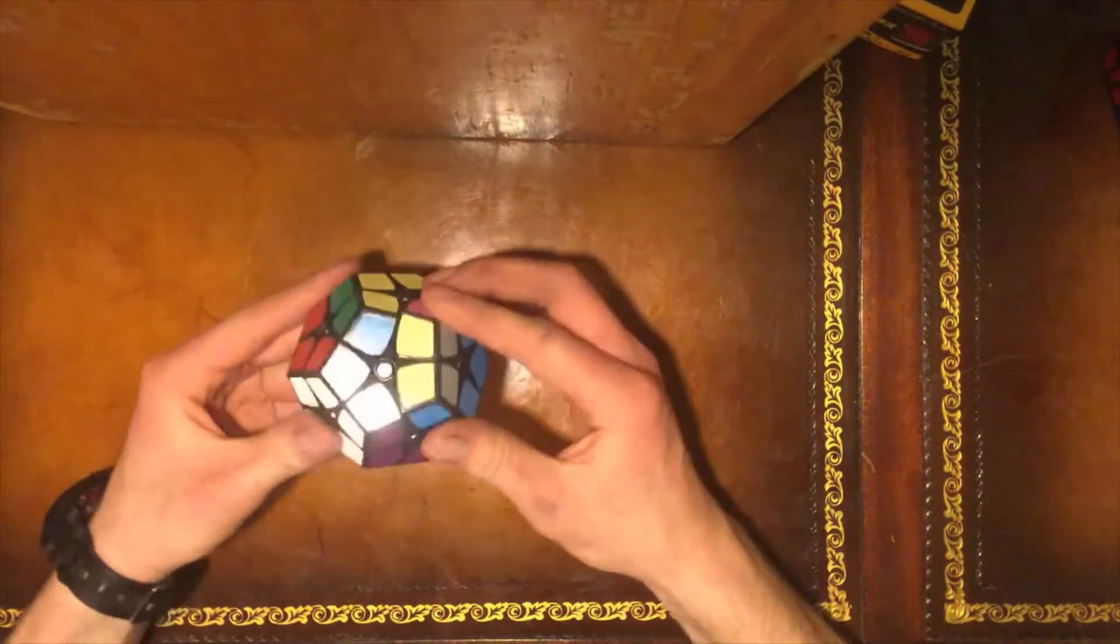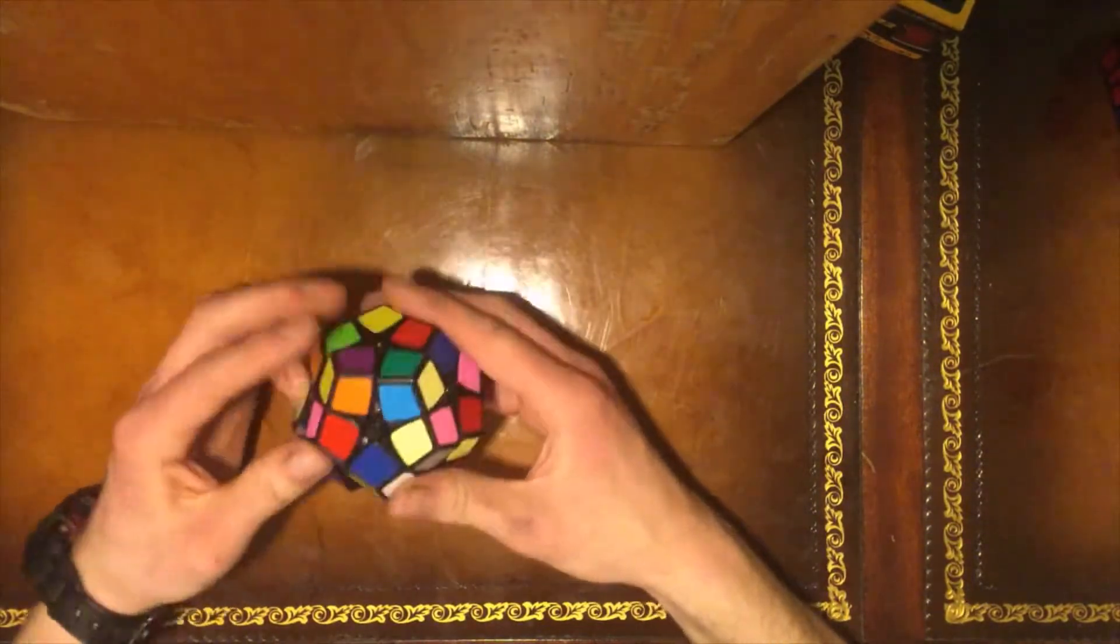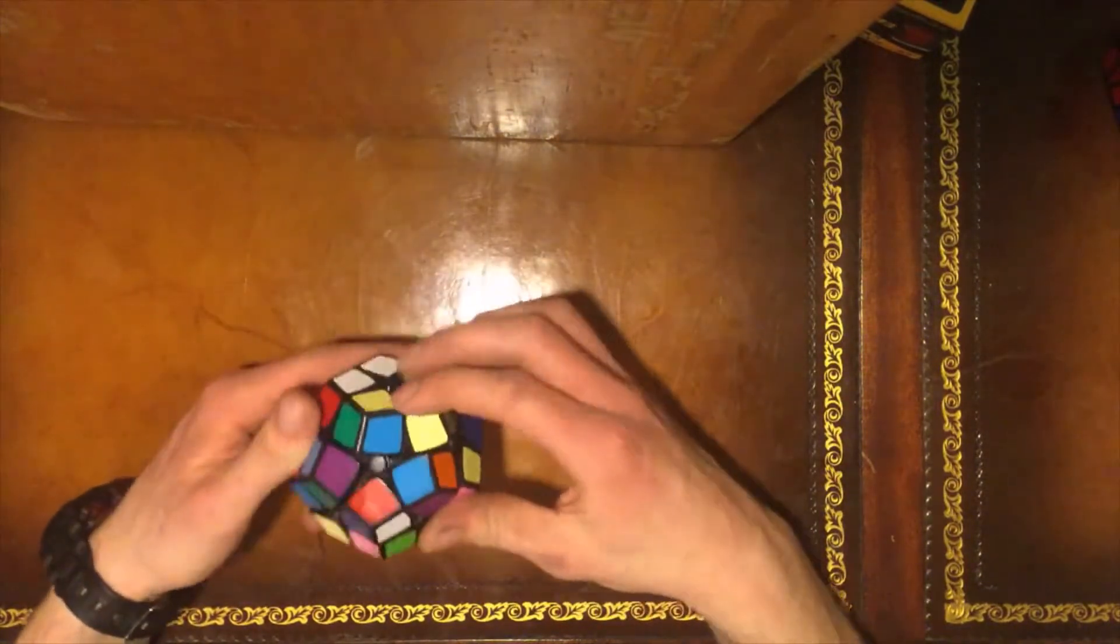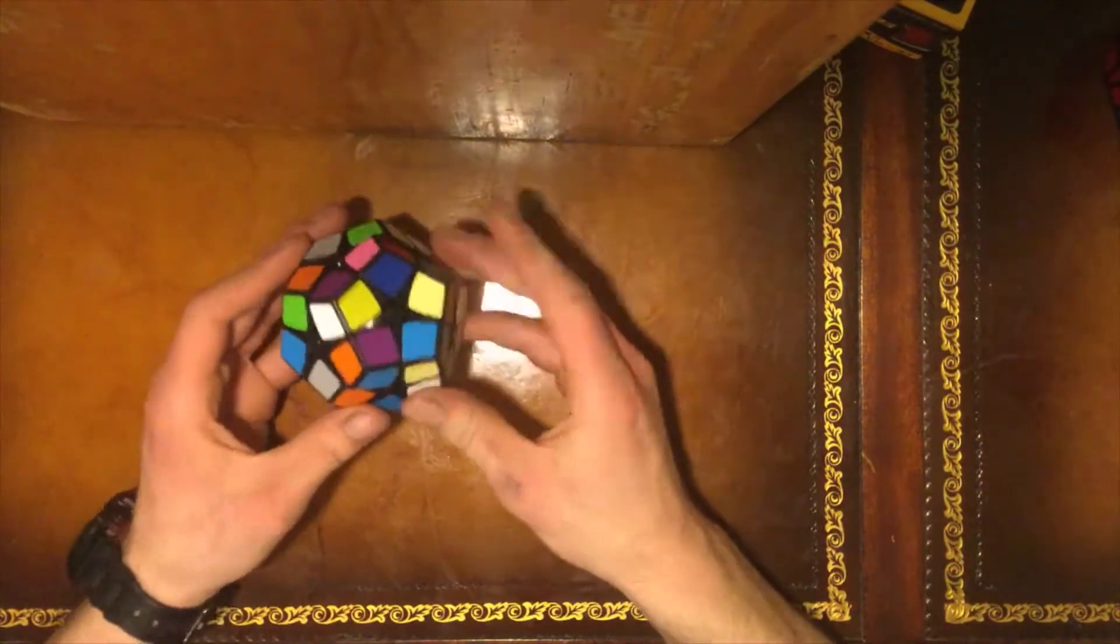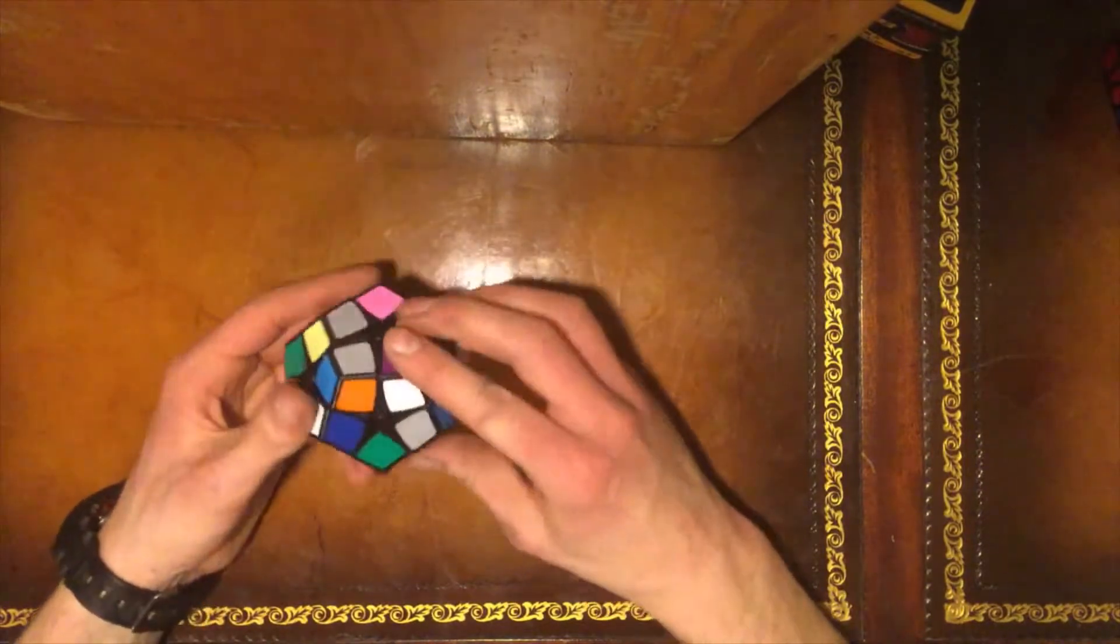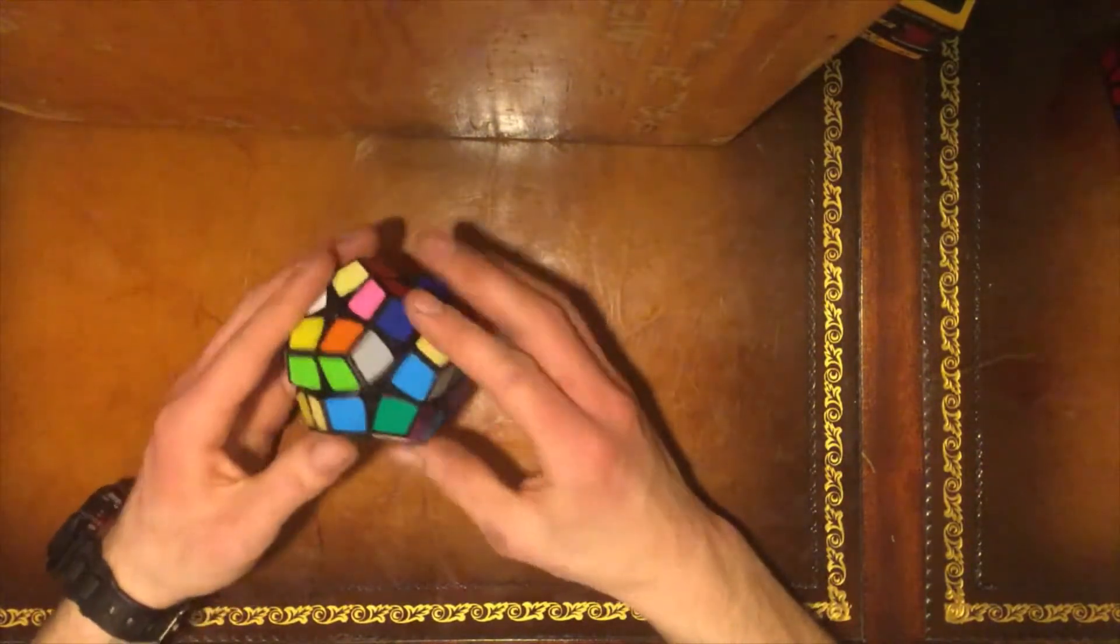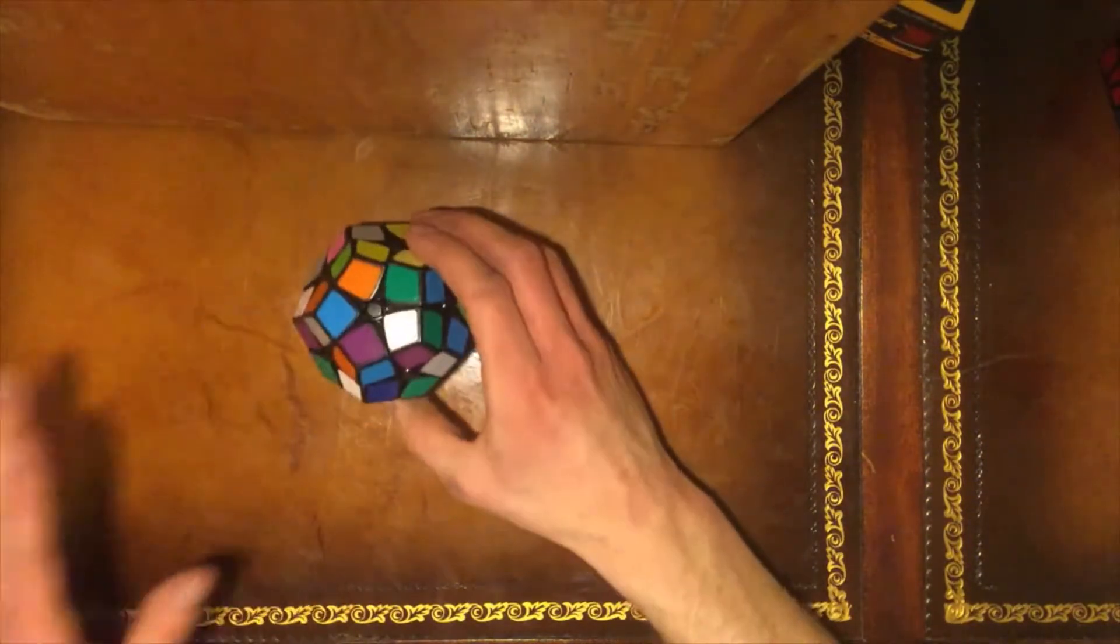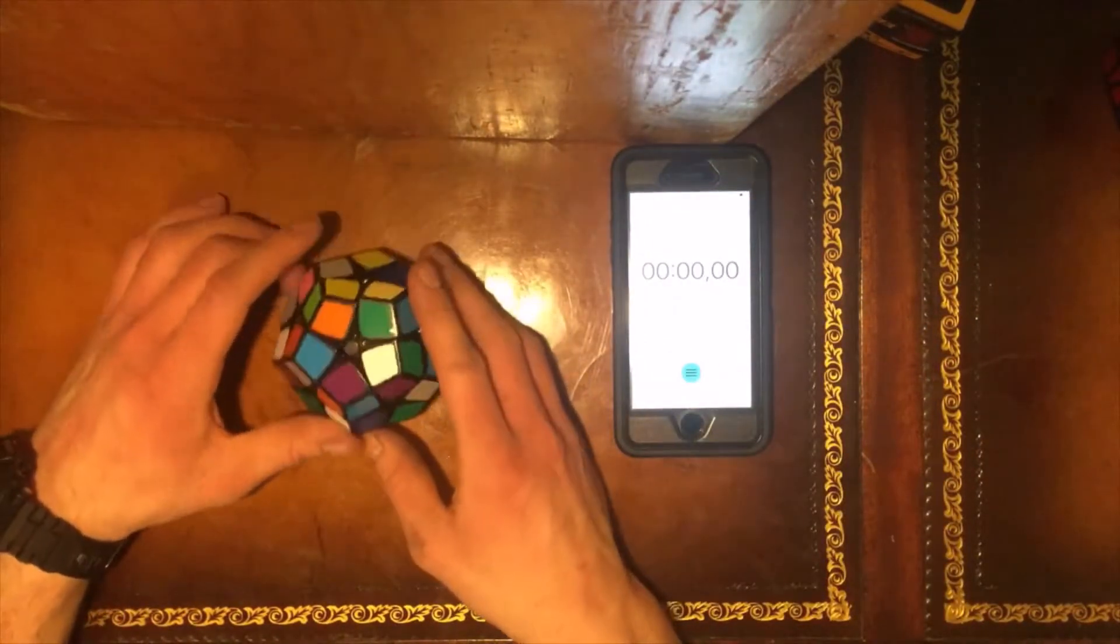Let's get this all scrambled up. This is just a 2x2, just with 12 sides, so in theory it shouldn't be all that difficult. It's just a dumbed-down version of Megaminx, right? Okay, we're gonna time it just for the fun of it, just to see how long it takes.